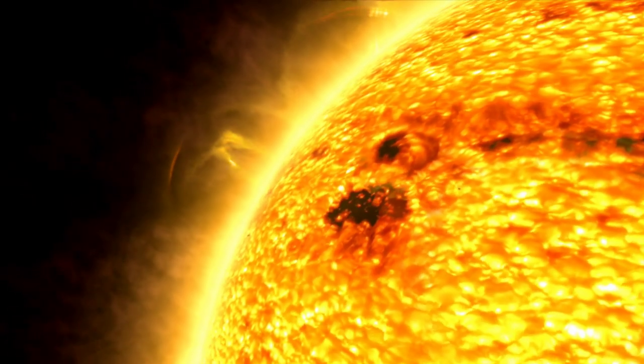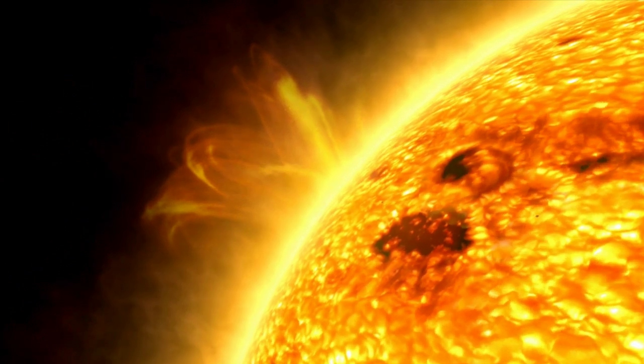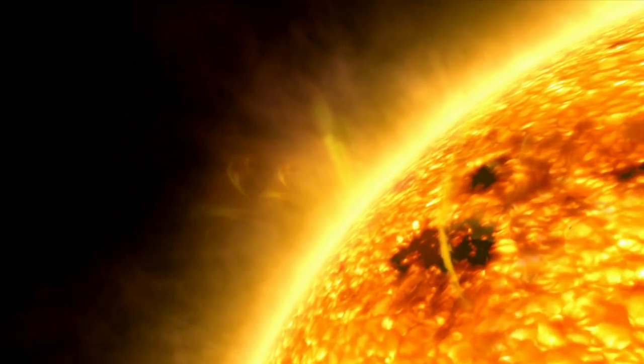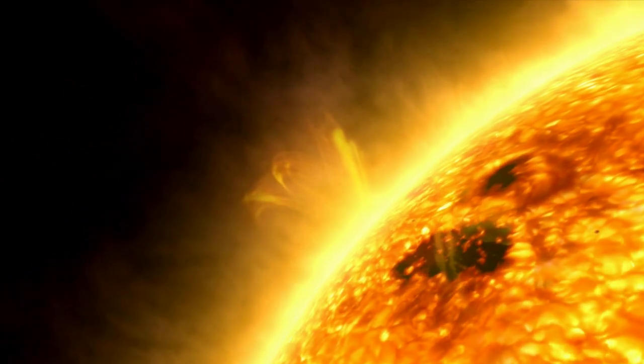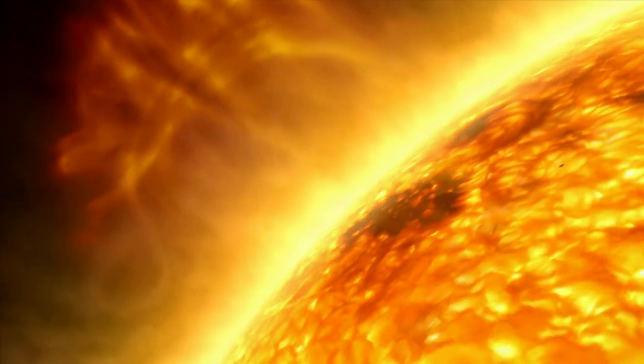Coronal mass ejections are, as the name suggests, huge ejections of plasma that erupt from the sun out into the solar system. You look for these epic explosions on the Solar Storm Watch website by watching videos of images sent down to Earth by STEREO.